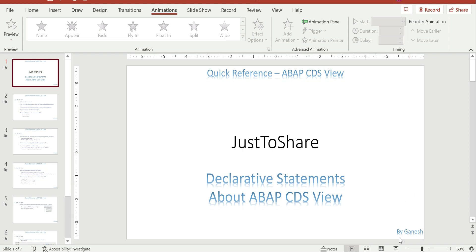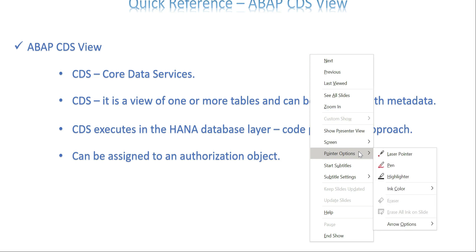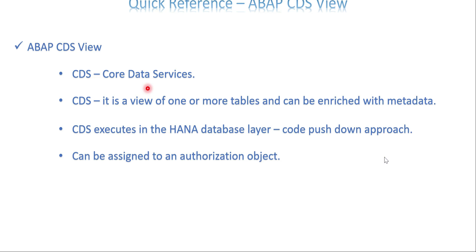So mostly with slides, in order not to waste your time re-explaining the same thing from the other CDS view videos. First, some key information you might be aware of: CDS stands for Core Data Services. It is a view that can be built on top of more than one table or a single table, and it can be enriched with metadata so it can be used in many applications. A CDS view is used in the HANA database layer, so it is a code push-down approach, making execution faster. It can also be assigned to an authorization object, so we have control over who can use the view.